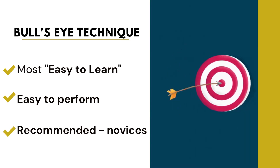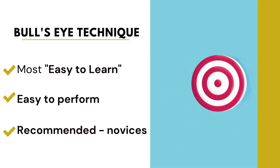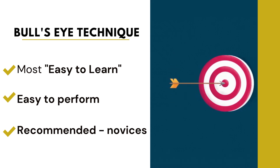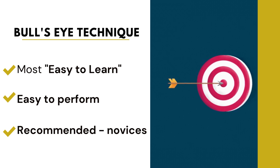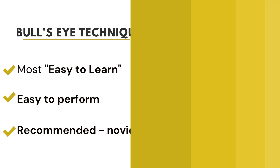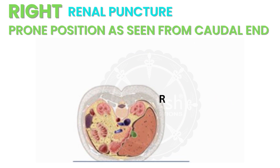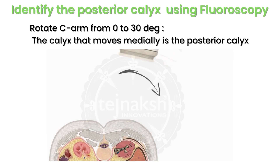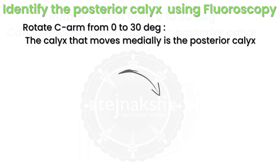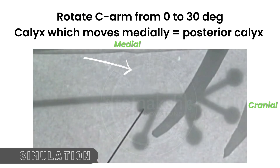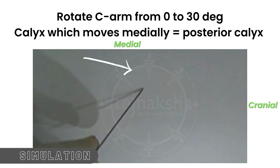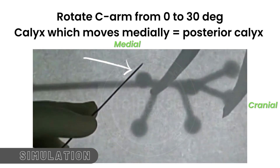Let us take a look at the step-by-step procedure for the bullseye technique. The bullseye technique is by and large the most easy to learn and replicate, and it is advisable that you learn this technique above all others. It is a good technique for the novice. We will be learning the right renal puncture as seen from the caudal view of the patient. First, inspect the pelvicalyceal system with contrast in zero degrees using the fluoroscopy unit, then identify the posterior calyx by rotating the fluoroscopy from zero degrees to 30 degrees. The calyx which moves relatively medially is the posterior calyx. Once identified, select the desired posterior calyx for puncture.